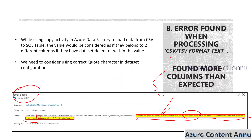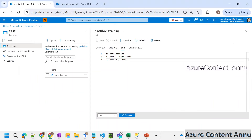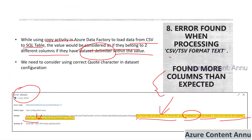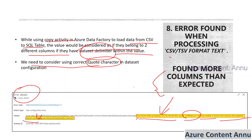So as we have seen in this demo, while using copy activity in ADF to load data from CSV to SQL table, the value would be considered as belonging to two different columns if they have the dataset delimiter within the value. In our case, comma was present in the address value, which was the reason ADF was considering it as two different columns. So we need to use the correct quote character in the dataset configuration — adjust the quote character and you will get the desired output. So that's it for this video. I hope you find this video helpful. Please hit the like button and subscribe to my channel. Thank you.